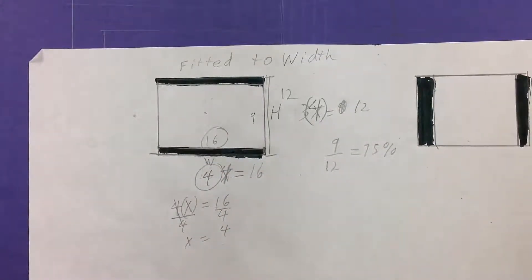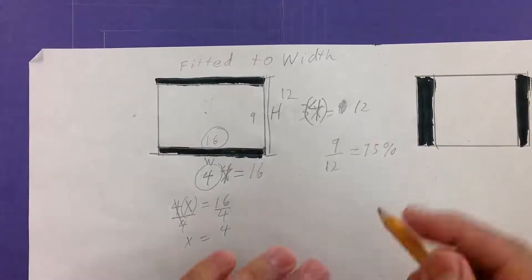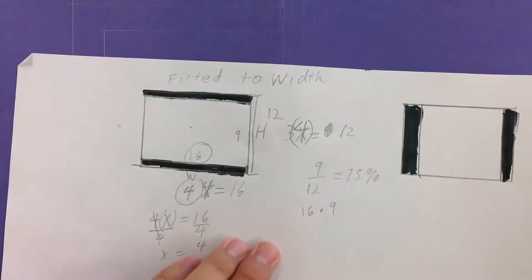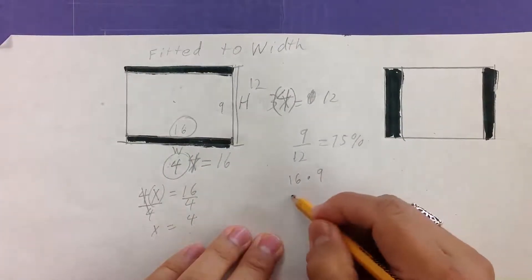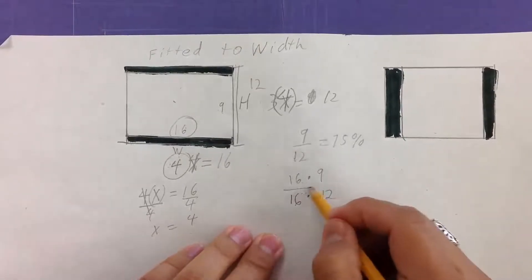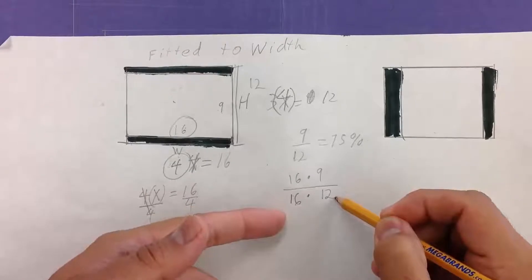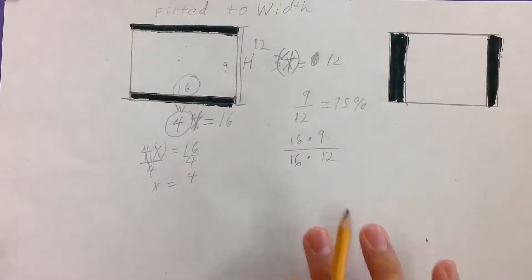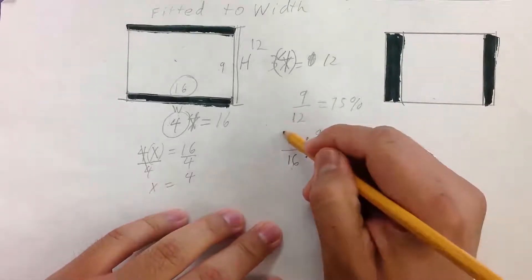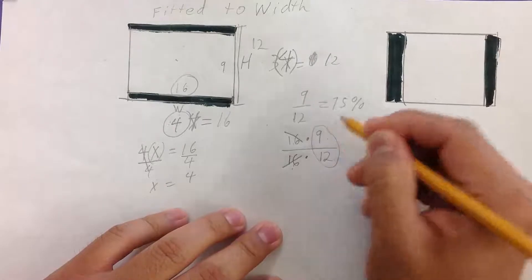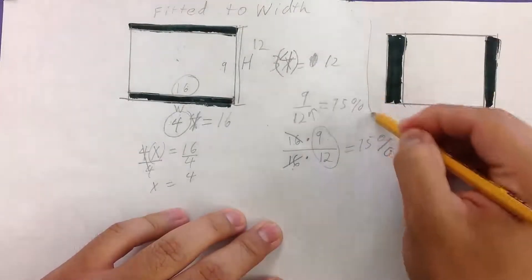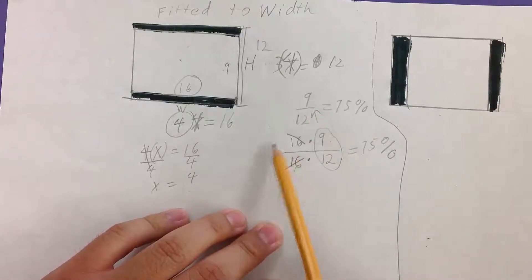But you're probably thinking, that might be true, but I don't really absolutely believe it. I'll show you that it's true. The area of this is 16 by 9, and then we have the second part, which would be 16 by 12, because that's the area of the entire screen. This is the part, this is the whole. These two cancel out. We're left with 9 divided by 12, which is exactly what we have here, which is equal to 75%.